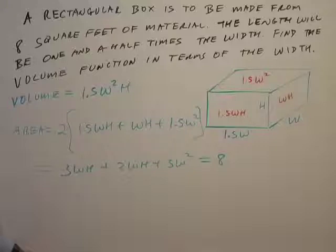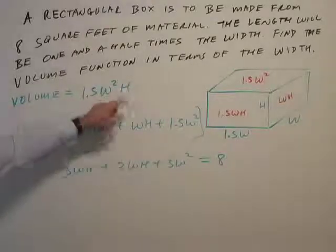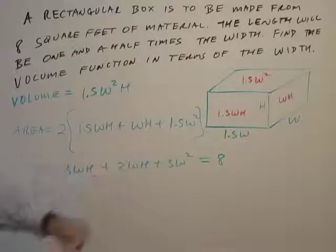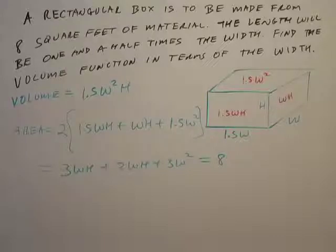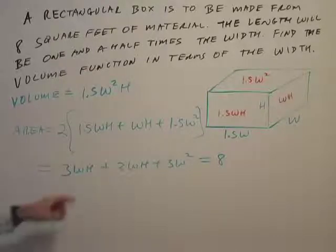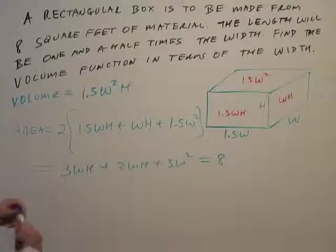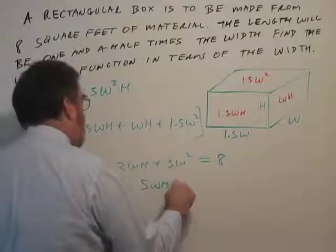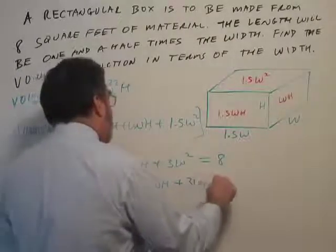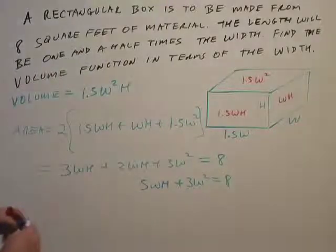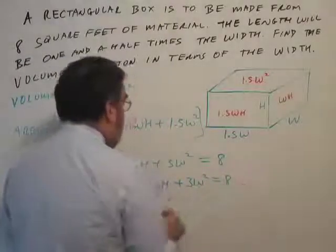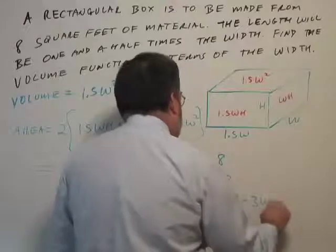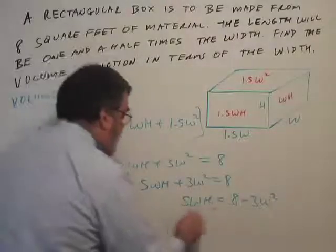So what do we have to do here? Let's take stock of this. In order to get this in terms of width, I've got to replace H. That means I have to solve for H. So it doesn't look too tough. For one thing, these terms will add together. That's kind of nice. So I get 5WH plus 3W squared equals 8. So I want to solve for H. That means I need to subtract 3W squared. 5WH equals 8 minus 3W squared, and then divide by 5W.